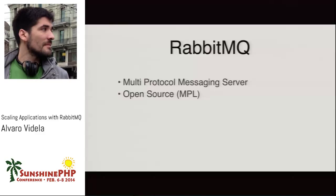It's a polyglot messaging system in many senses: you can call against Rabbit with many languages and you can extend RabbitMQ with many languages as well. It's written in Erlang and OTP — this is the part where I do the Church of Erlang introduction. Erlang is a language written for highly available applications, for message passing and concurrency, and all that is baked into the language so the RabbitMQ developers don't need to implement it. Less code, less bugs — that's the long story short.